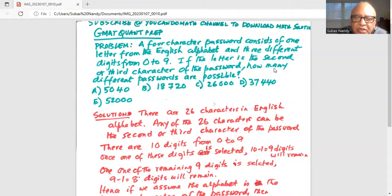Solution. There are 26 characters in English alphabet. Any of the 26 characters can be the second or third character of the password. There are 10 digits from zero to nine.